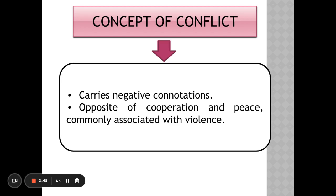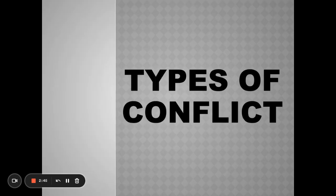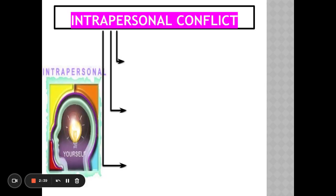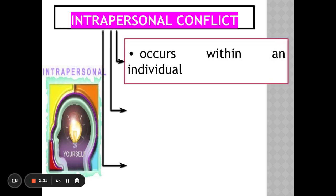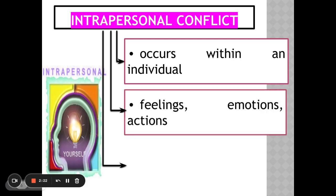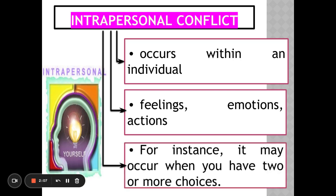Next we're going to explore different types of conflict. We have intrapersonal conflict — it occurs within an individual, so it's within yourself. Your feelings, emotions, and actions are all part of intrapersonal conflict. It may occur when you have two or more choices to make.